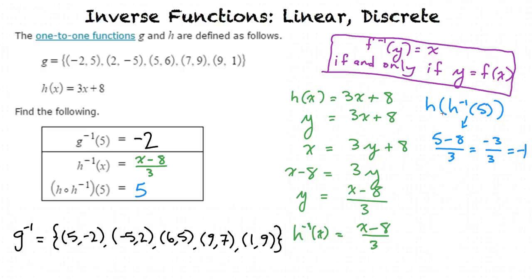Now we find h of -1. We plug this into the original h(x). So h(-1) = 3(-1) + 8. Well, -3 + 8 equals 5.